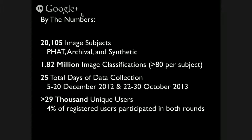In all, we had 1.18 million image classifications, greater than 80 per subject, which has given us a well-sampled look at what the identifications citizen scientists were making. Data collection happened over 25 days in the fall of 2012 and 2013, and we're just finishing up the catalog and analysis work now. We had over 29,000 unique users. For registered users who participated — about 9,500 — only 4% actually participated in both rounds. There were a lot of people who were just coming and going, and we got complaints from people who missed the second round.